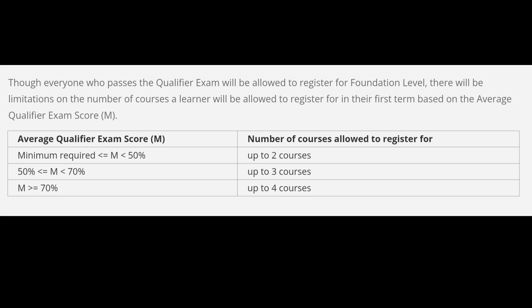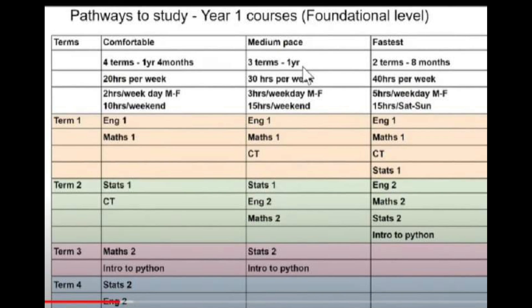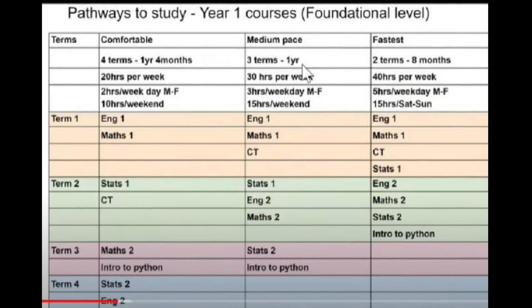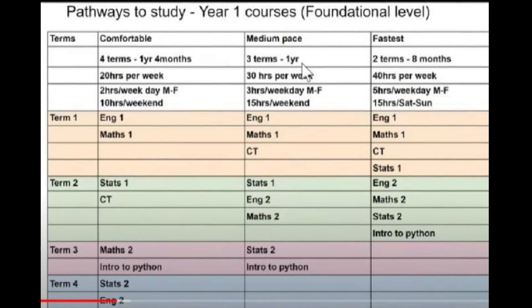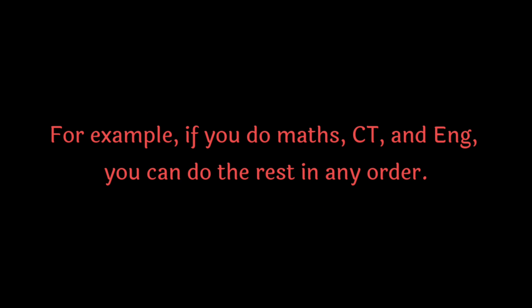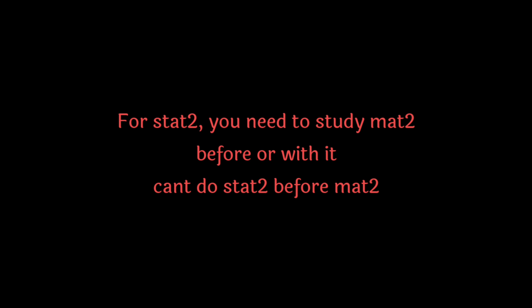Moving forward to the different subject combinations you can choose for this term — it basically depends on your qualifier score. If your score is below 50%, you are eligible for only two subjects. If your score is between 50% and 70%, you are eligible to apply for three subjects. And if your score is above 70%, you are eligible to apply for all four subjects this term. On screen you can see different options you can choose based on your available time and your score.